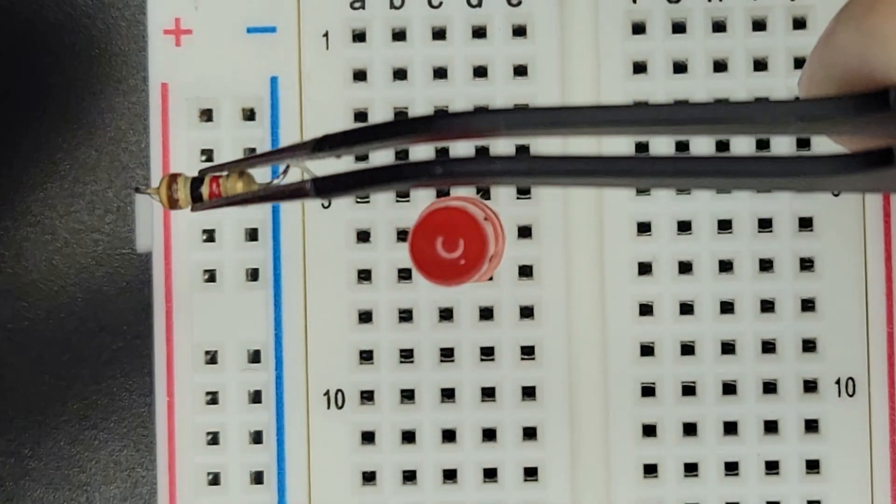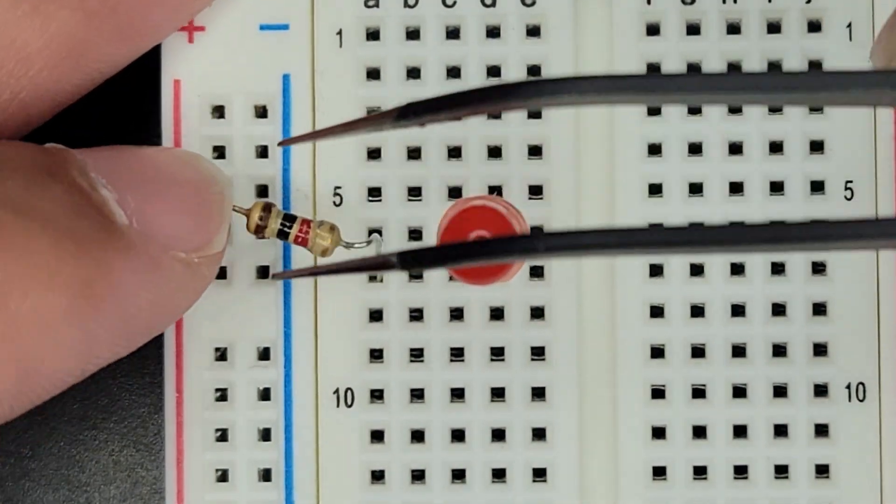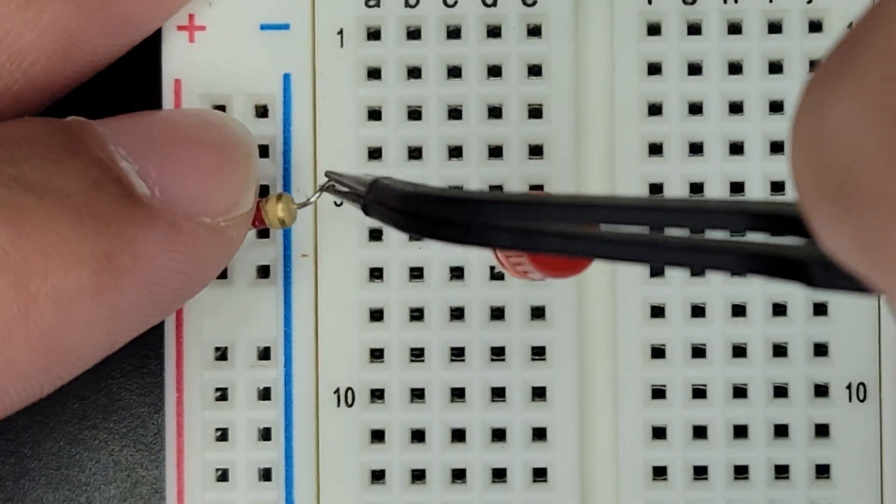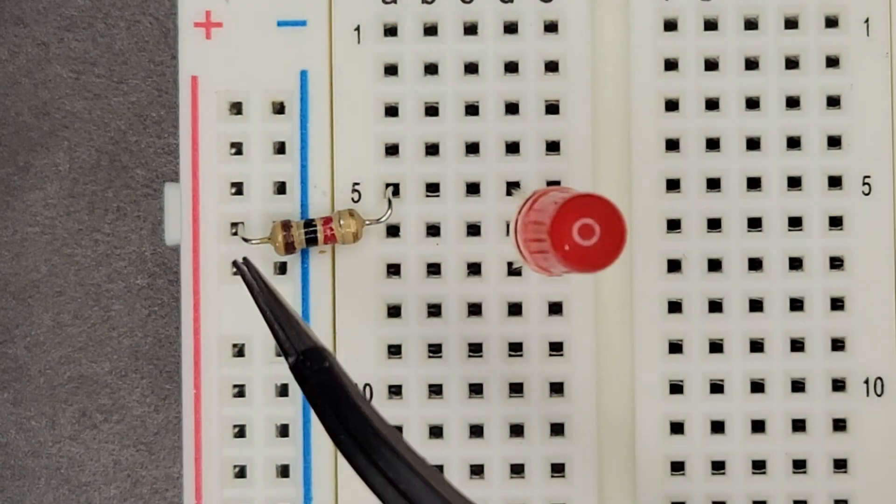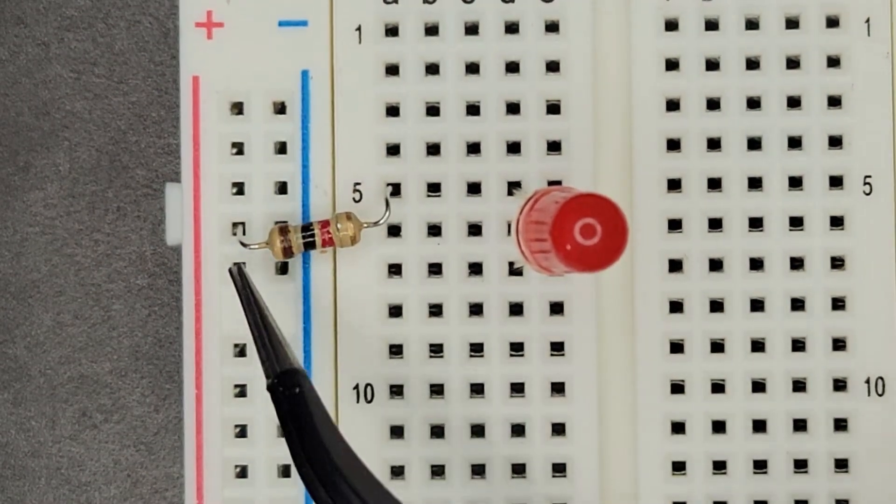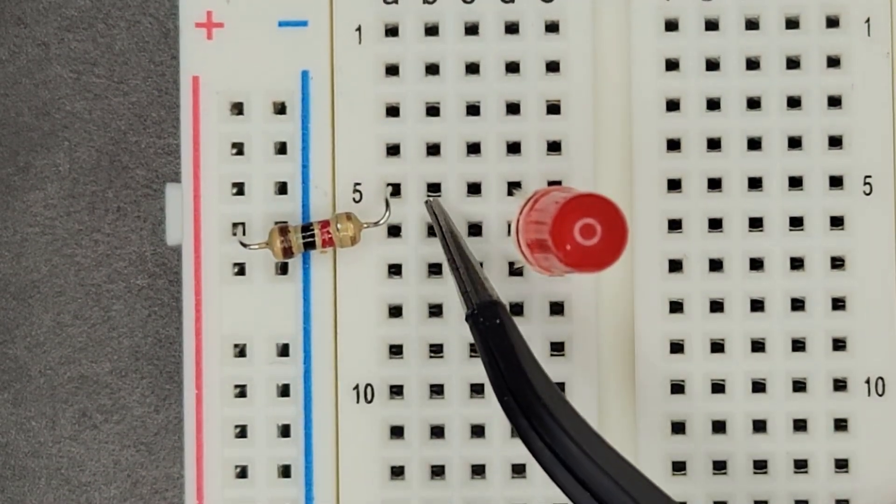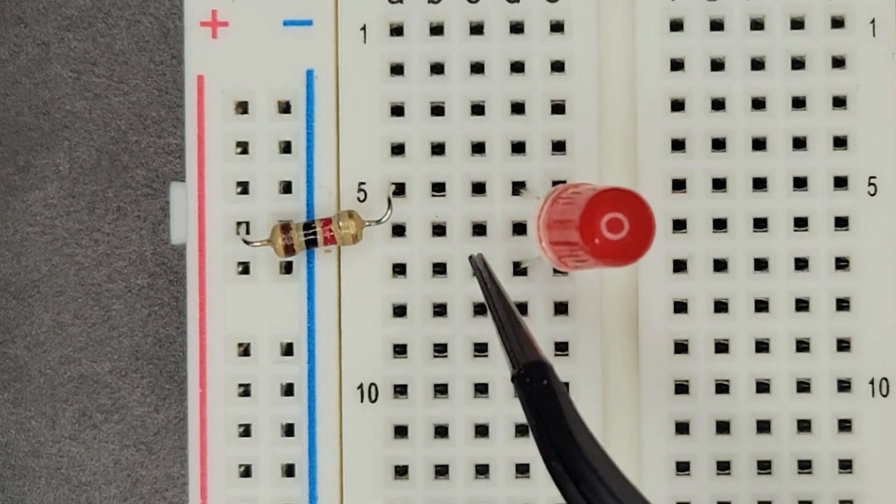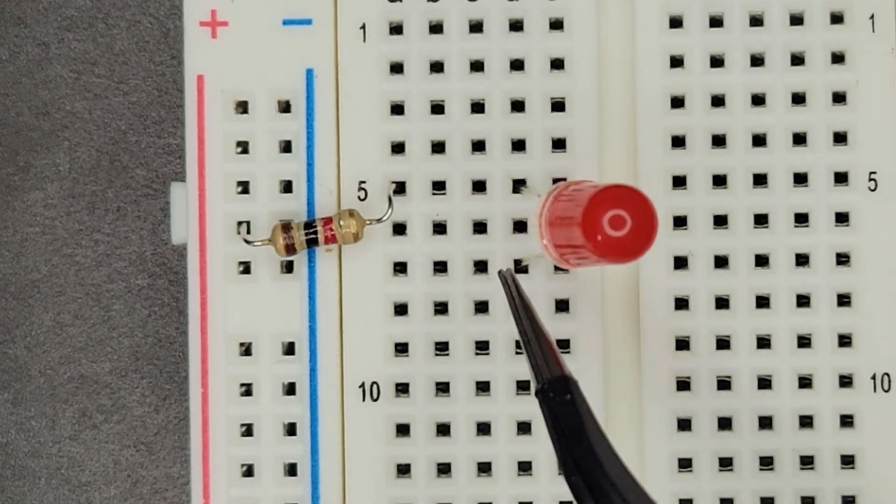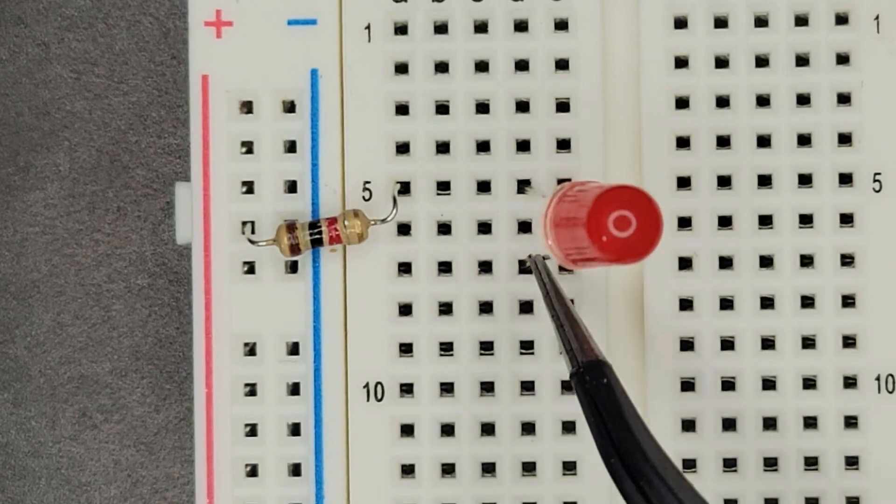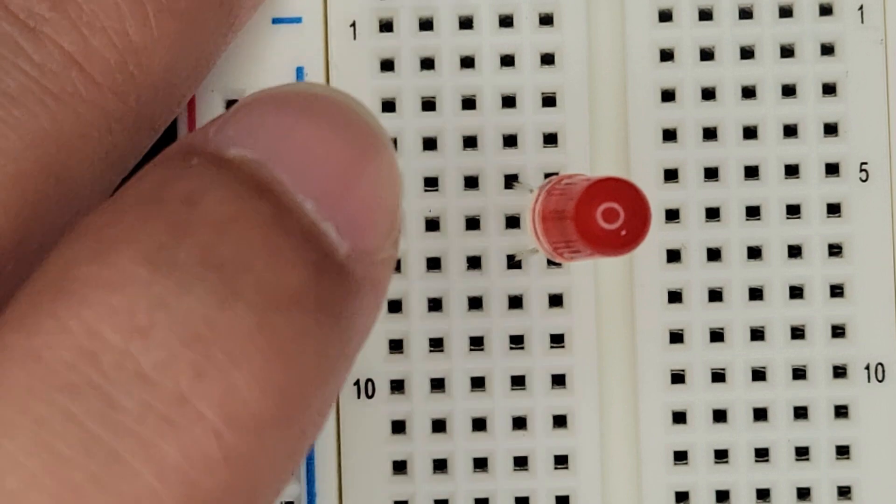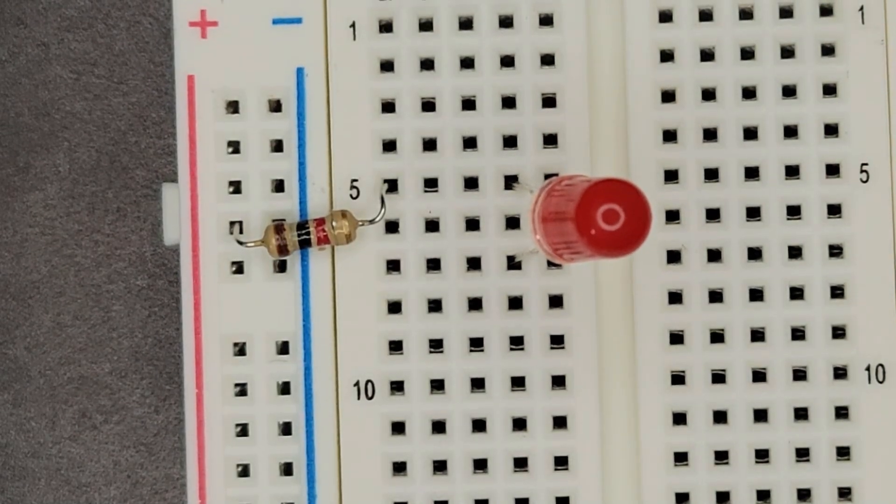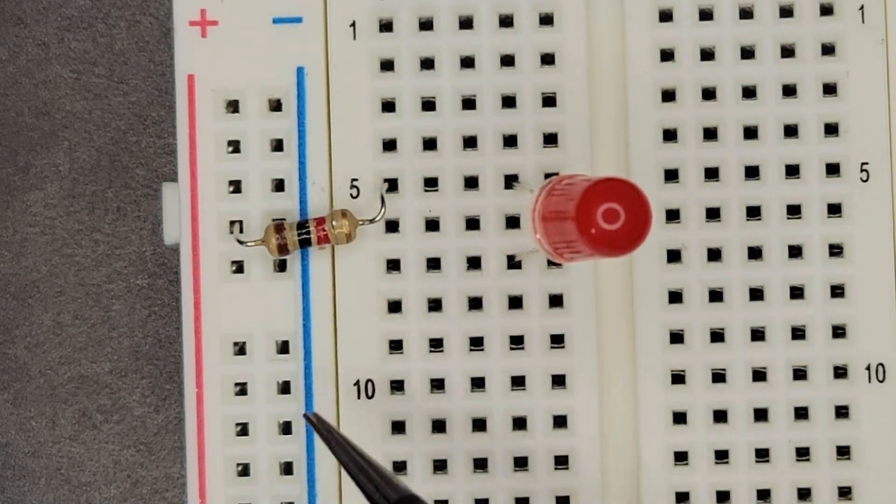So I'm going to plug in from our positive rail to row five. So this will pull power from the positive into the resistor, onto row five which is connected, and then go up the LED and then out the short pin which is a negative, into row seven. So now all we need to do is make sure that row seven has a way to get back to ground.